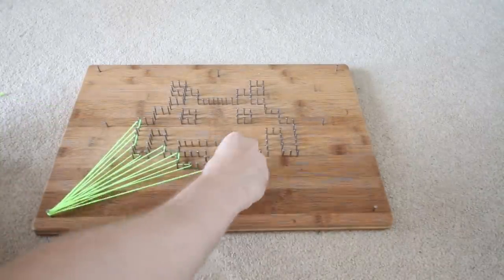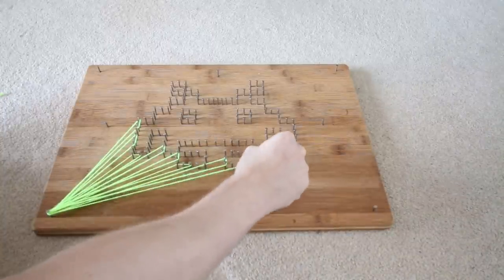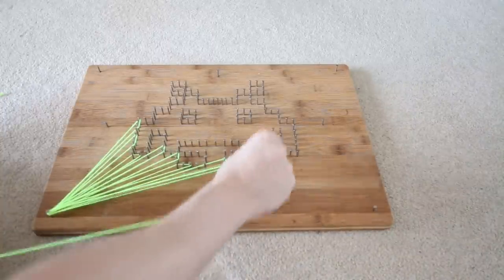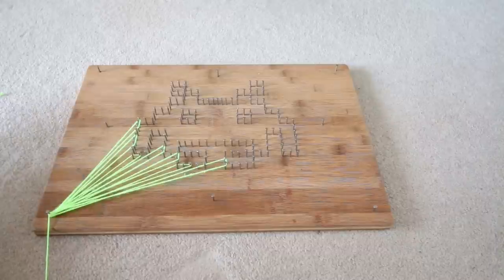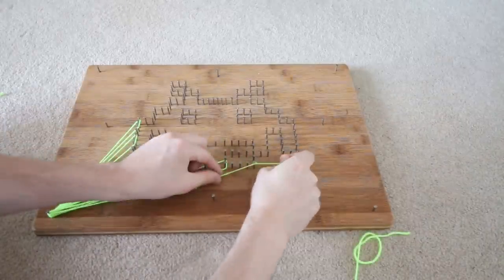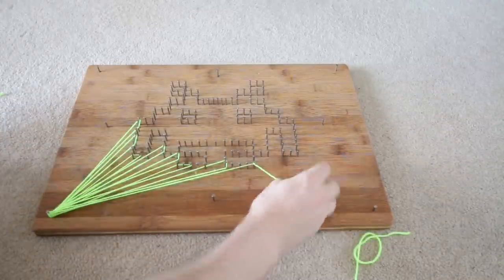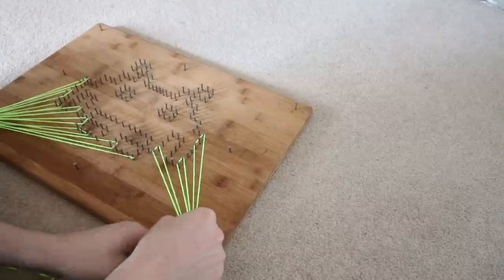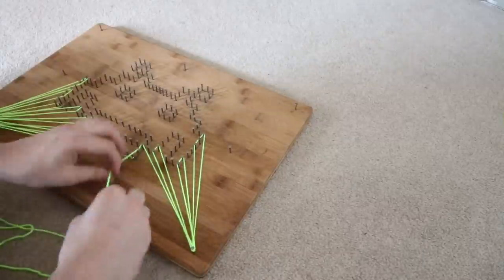I kept threading the wool until it reached as far as it could reach on the opposite side. I then tied a knot and trimmed it down. I then repeated this process for the four remaining outer corners.